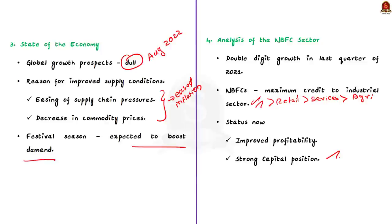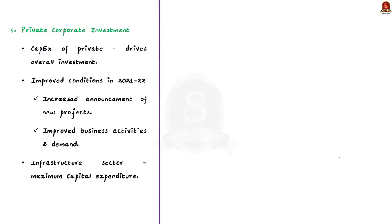The bulletin article highlights that capital expenditure of private corporate sector plays a significant role in driving the overall investment climate in the economy. Announcement of new projects increased significantly during the year 2021 and 2022. After the impact of COVID pandemic, the business activities and the demand for goods and services improved. It also says that infrastructure sector continued to attract maximum capital expenditure.